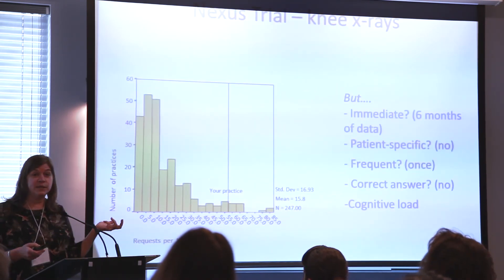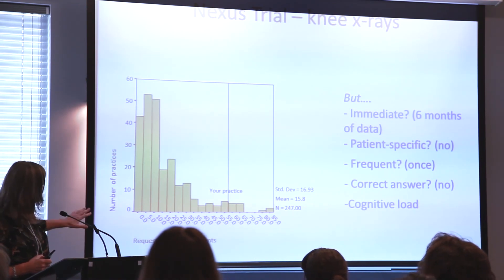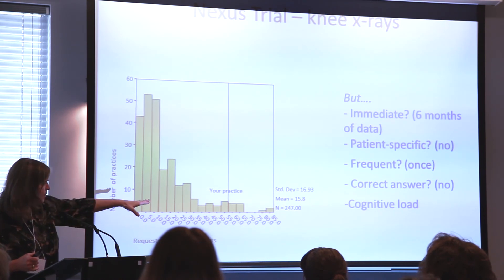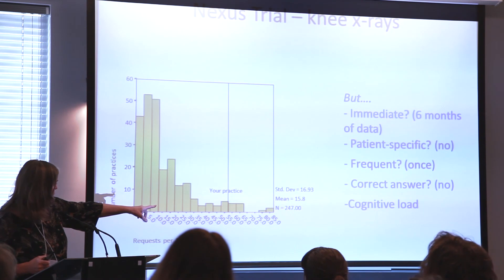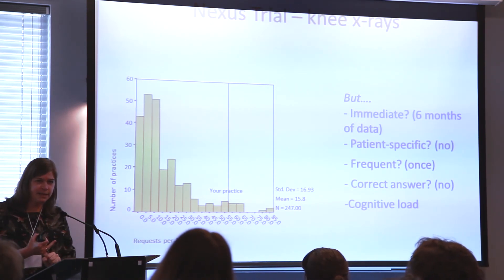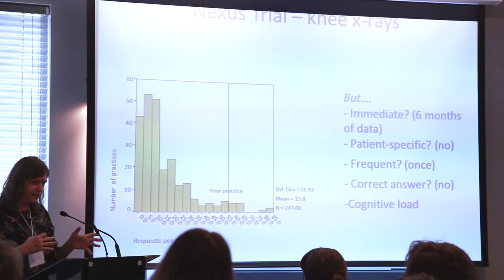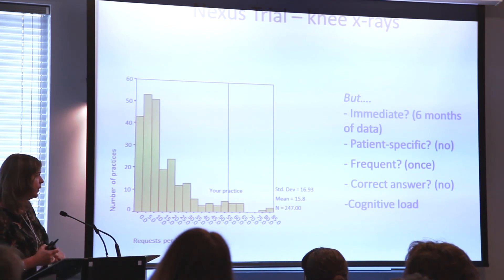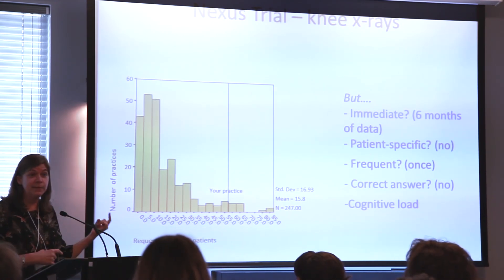Here's one more — a study looking at trying to decrease the amount physicians were doing knee x-rays where they were not indicated. There's me: I'm one of a group of five practices that prescribe 55 per 1,000 patients. How immediate is this? It was from the last six months. Is it patient-specific in any way? Not really. I was given this once and only once. Is there anything here about the correct answer or what I'm supposed to do? It gives me information but doesn't help me move forward. And what about the cognitive load in looking at this — with maybe a minute or two of a physician's time?